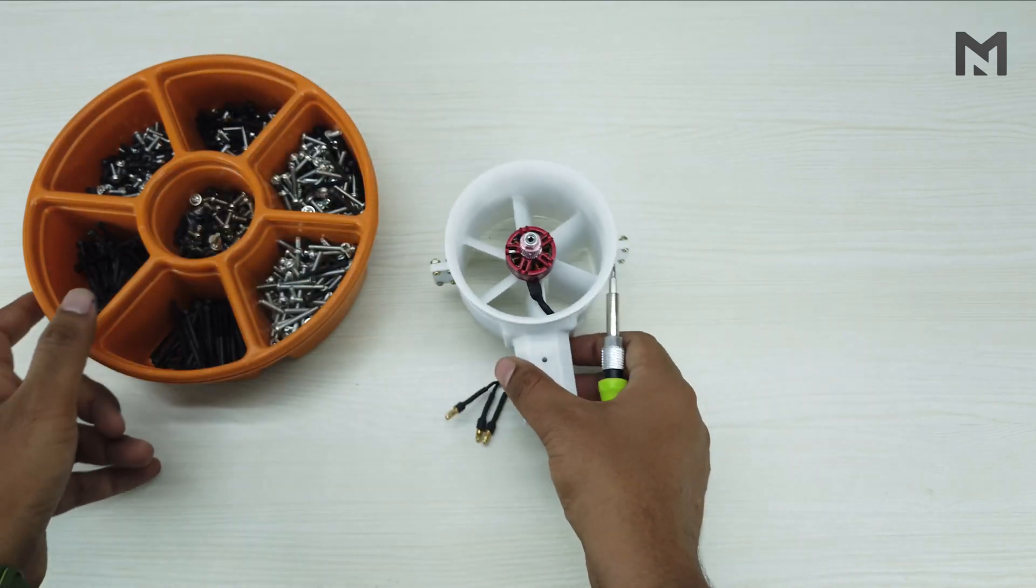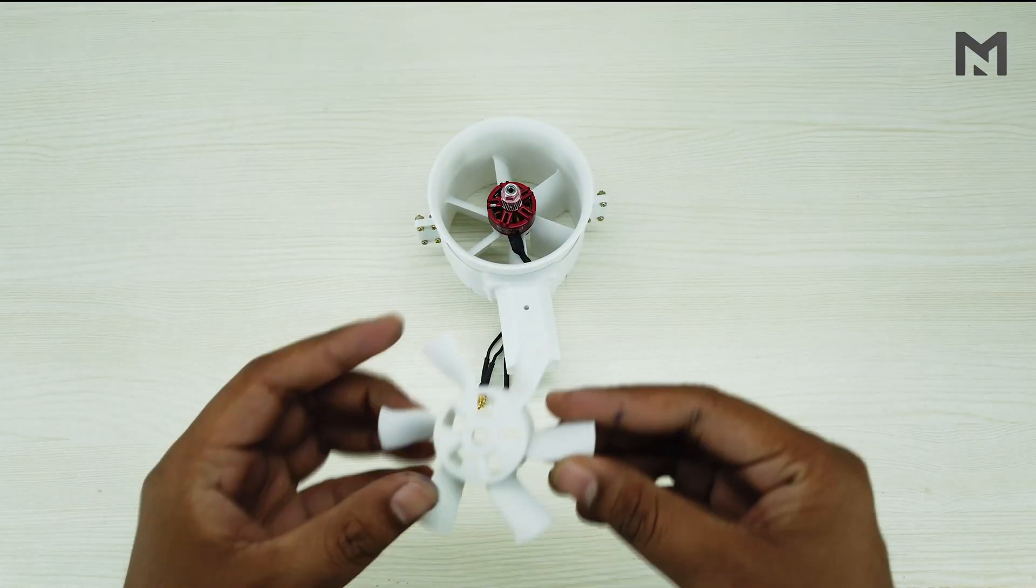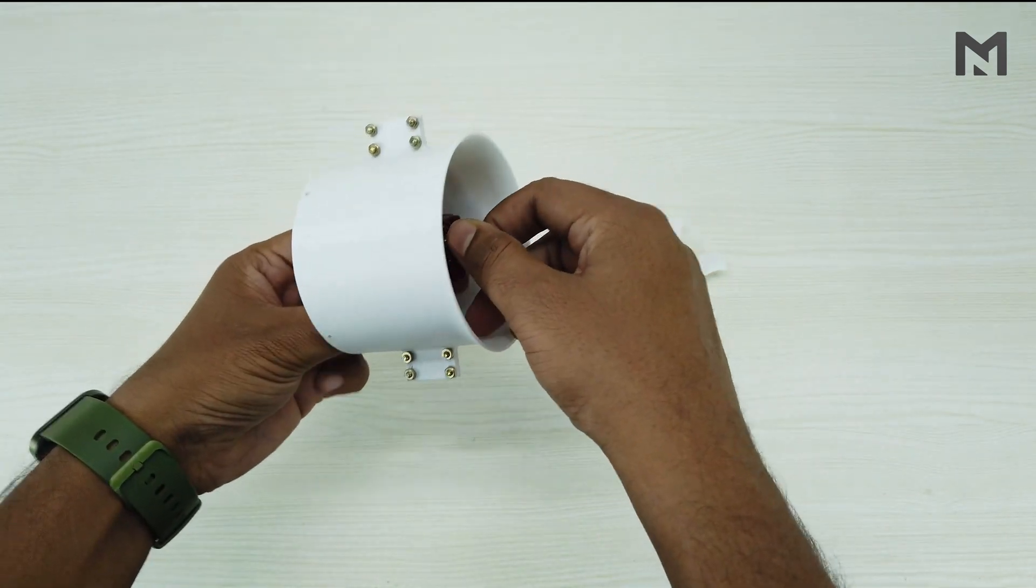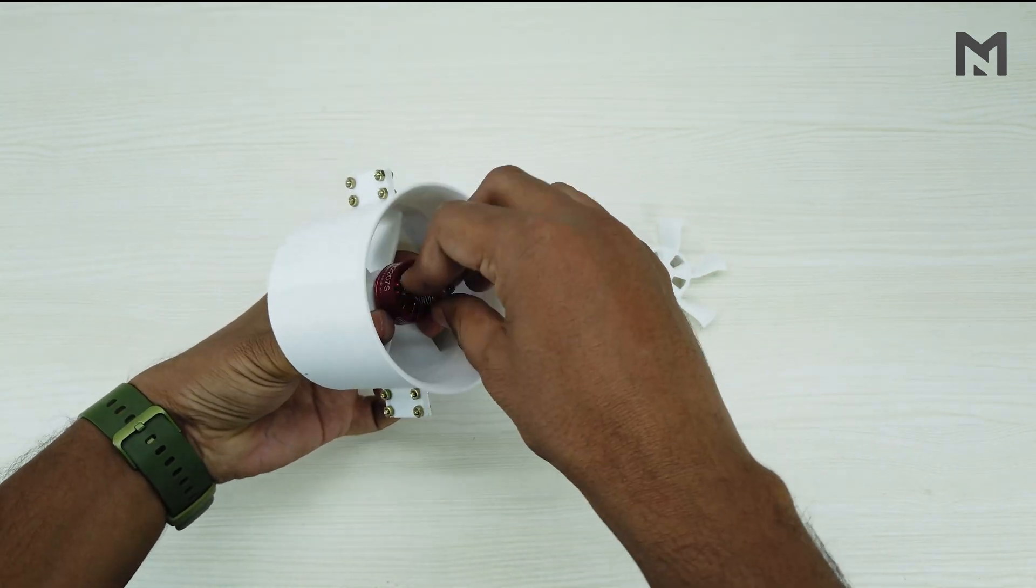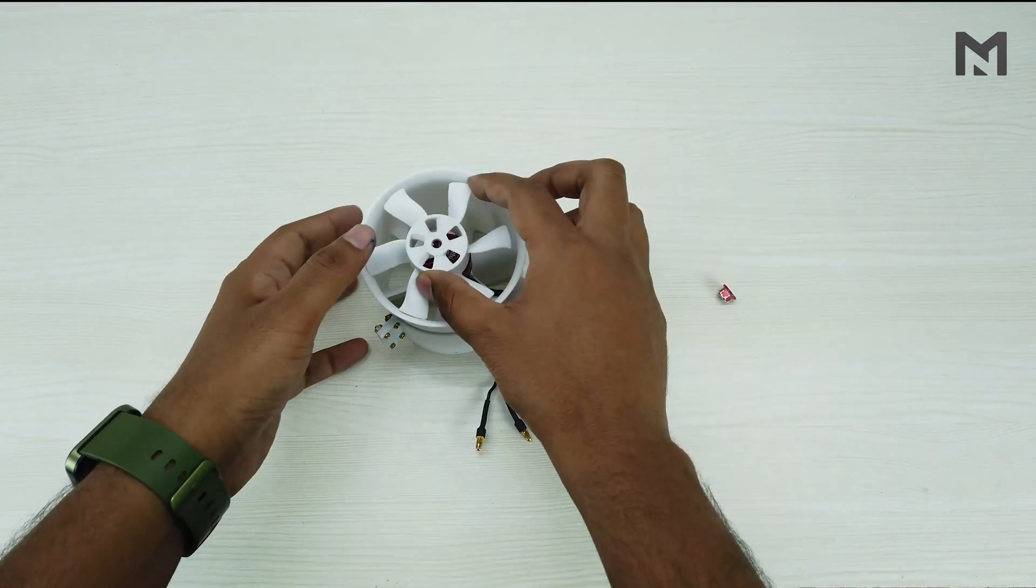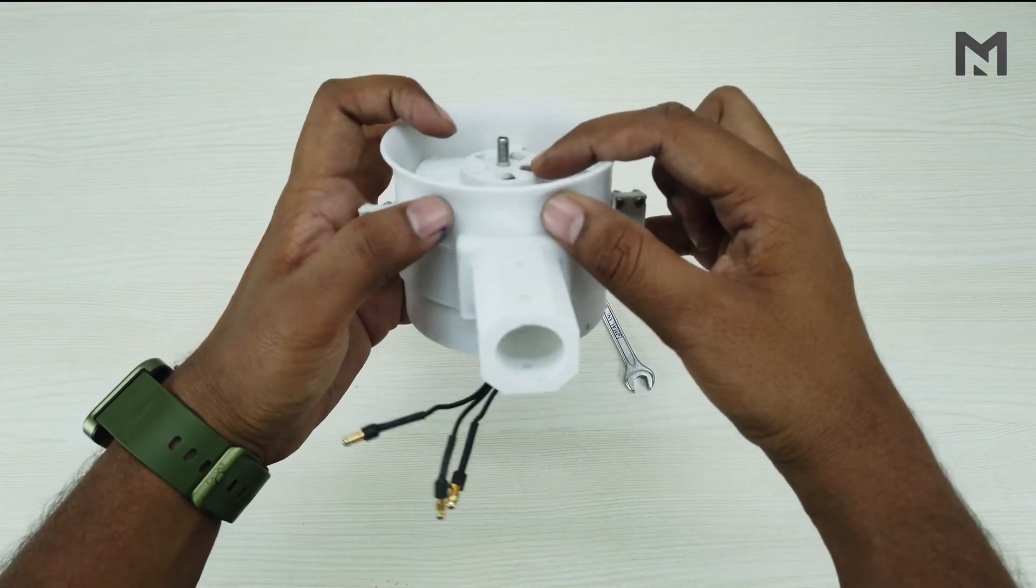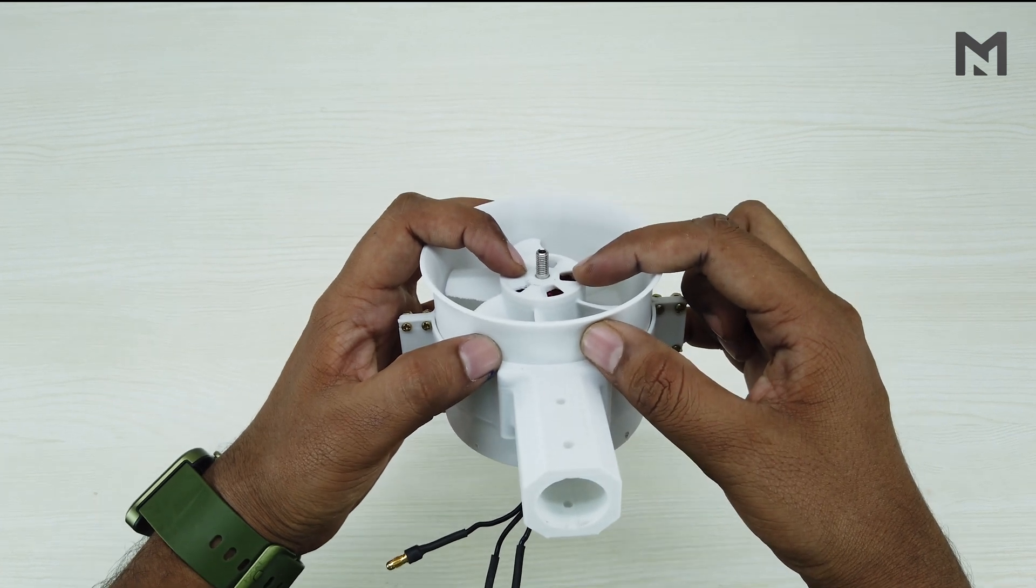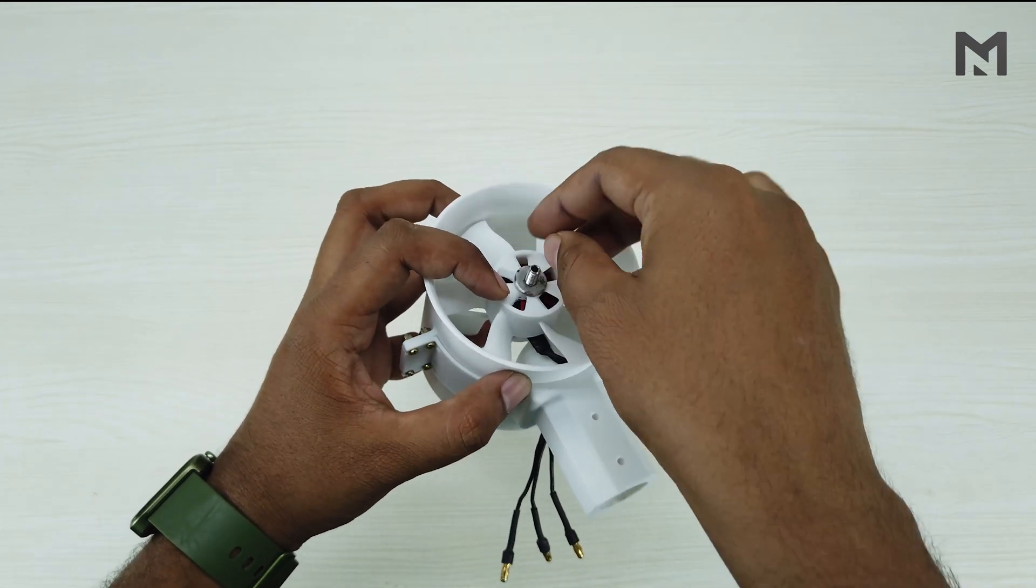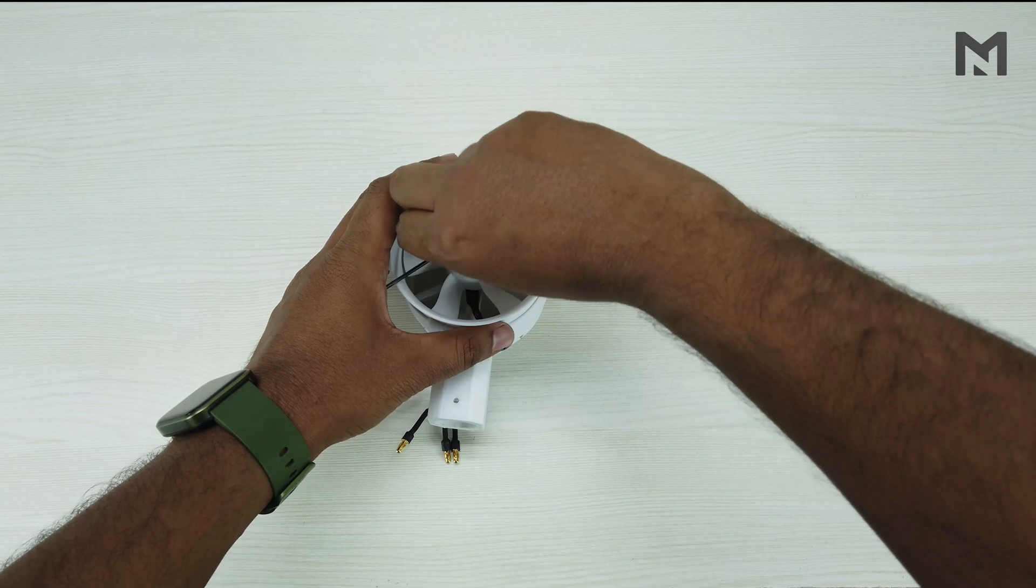If you haven't checked out my previous video of 80mm EDF, then click on the i button. Here is the 6 blade propeller for the thrust test. Take out the motor nut and fix the propeller on top. As you can see there is a gap between the motor thread and the propeller. I am using this washer to overcome that distance. Now tighten the nut and fix the propeller.